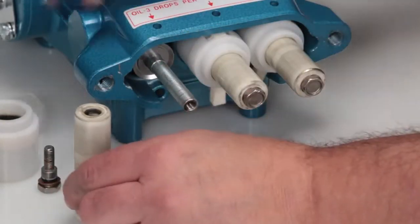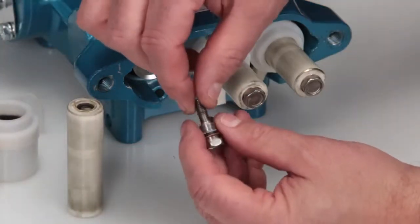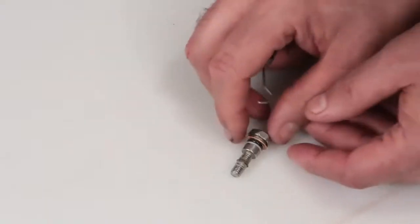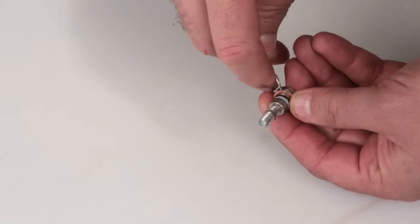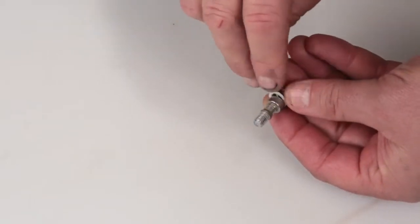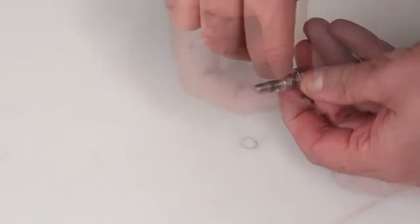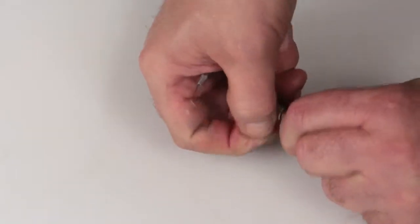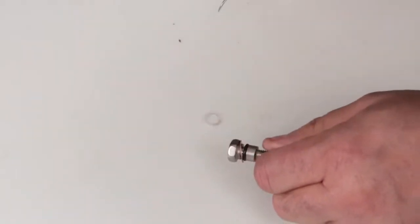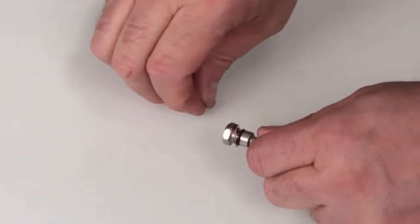Before reinstalling the plunger retainer, change the O-ring included in the kit. Using a small screwdriver or pick, remove the backup ring, followed by the O-ring. Replace with the new O-ring, followed by the backup ring.